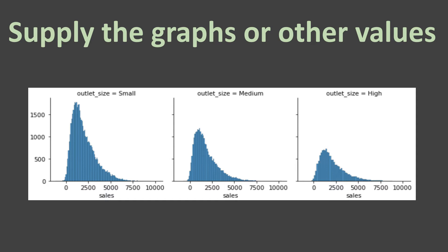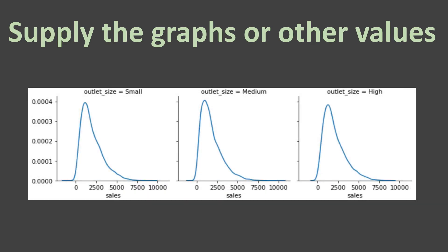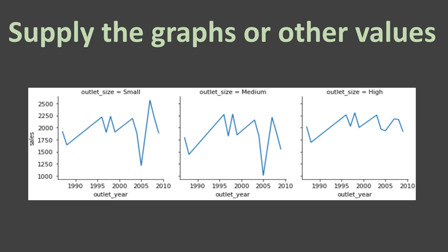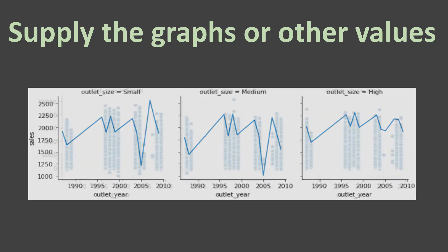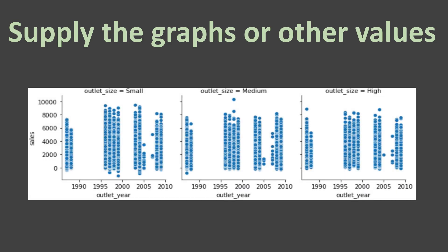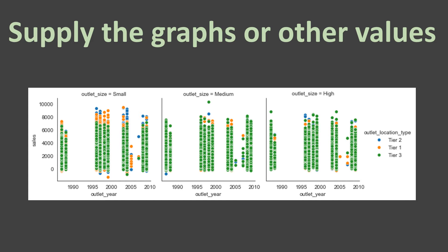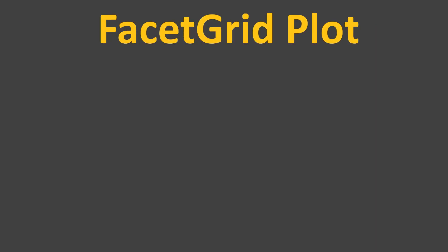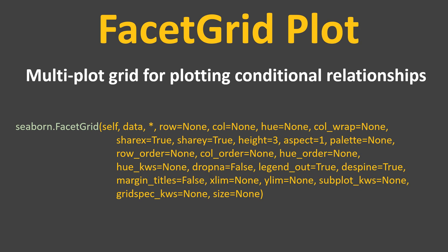For example, if you want to see the count for the range of sales, you can supply a histogram. If you want to see the distribution, you can supply a KDE plot. If you want to see sales trend year on year, you can supply a line plot. If you want to see the relationship between sales and outlet, you can plot a scatter plot. As per the Seaborn library, FacetGrid is defined as a multi-plot grid for plotting conditional relationships.